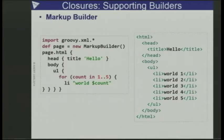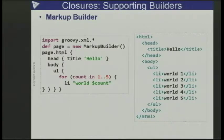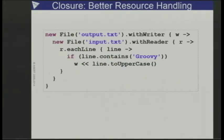Closures are used just everywhere throughout Groovy. Basically, you've got chunks of code — everything between the brackets is a bit of code. When you've got markup builders in Groovy, these are methods taking closures as parameters that have methods taking closures as parameters inside them, and so on. You can intermix that with normal code.